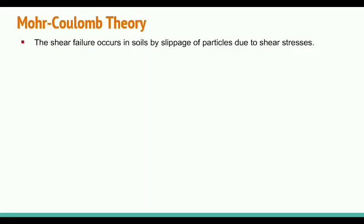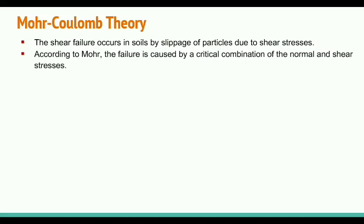According to Mohr-Coulomb theory, shear failure occurs in the soil by slippage of particles due to shear stresses. Whatever shear stress is induced on the failure plane, it is also dependent upon the normal stress — the shear is dependent upon the normal stress. According to the Mohr-Coulomb statement, failure is caused by the critical combination of normal stress and shear stress.